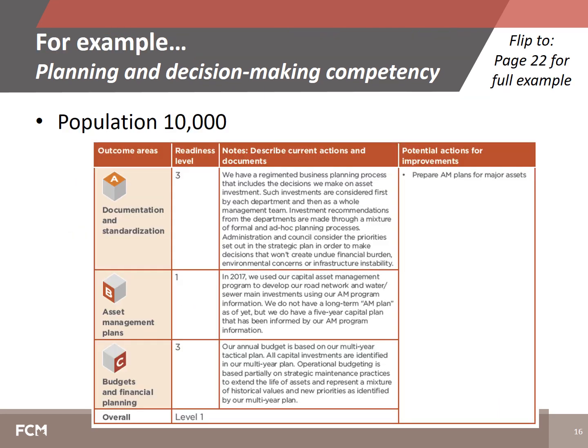For example, a municipality with a population of 10,000 that has started their asset management journey might assess themselves at readiness level 3 in the documentation and standardization outcome area, at readiness level 1 in the asset management plans outcome area because they lack a long-term asset management plan, and at readiness level 3 in the budgets and financial planning outcome area. With one outcome area at level 1 and two at level 3, the municipality determines their overall readiness level in planning and decision making is level 1.